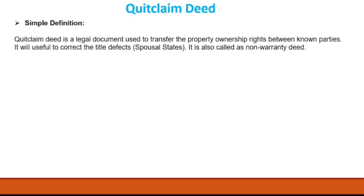The quitclaim deed is also called a non-warranty deed. If you have 50% ownership rights and convey them to someone else, you are coming out from the title without giving any warranty — you are not saying there are no liens or loans, because other partners may have taken loans on the property. You can only say: 'I am conveying my property rights to you.' That is why the quitclaim deed is always called a non-warranty deed.